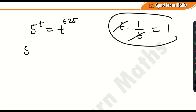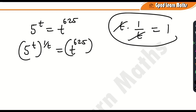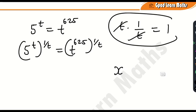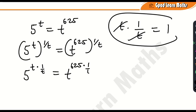So this is going to be 5 raised to the power t times 1 over t, and you have to do the same thing to the right-hand side for balance — so t raised to the power 625 times 1 over t. From the power rule, x raised to the power a, all raised to the power b, equals x raised to the power a·b. So t and 1 over t multiply together, giving 5 raised to the power t·(1/t) on the left, and t raised to the power 625·(1/t) on the right.